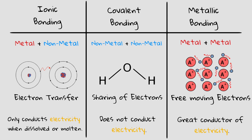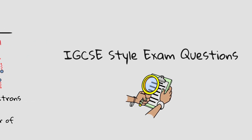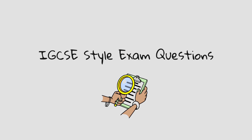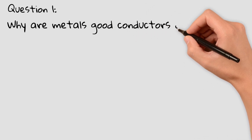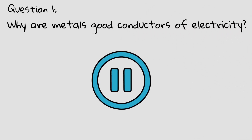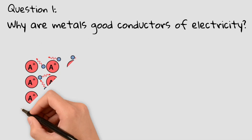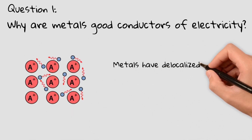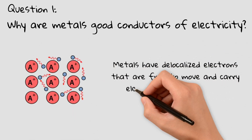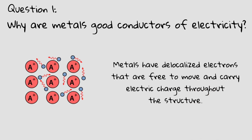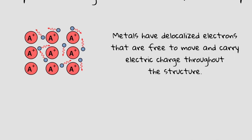For more information about ionic and covalent bonding, check out my videos. Now let's test your understanding with two IGCSE style exam questions. Question 1: Why are metals good conductors of electricity? Pause the video and give it a try. The answer is: metals have delocalized electrons that are free to move and can carry electric charge throughout the structure, allowing electricity to pass through easily.